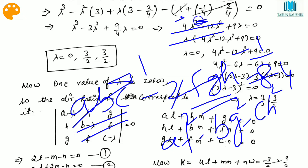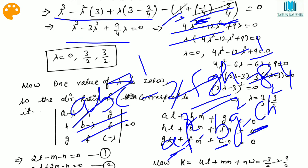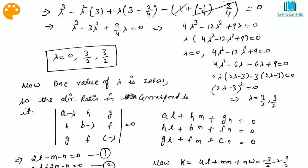After simplification, f² = g² = h² = 1/4, giving 3/4 total. So we have: lambda³ - 3lambda² + (9/4)lambda = 0. Multiplying through and solving, we get the three lambda values: lambda = 0, and lambda = 3/2, 3/2. So two values are equal (both 3/2) and one value is zero.